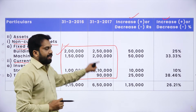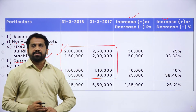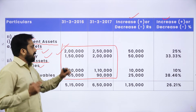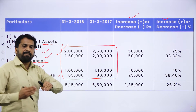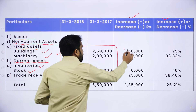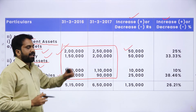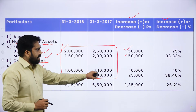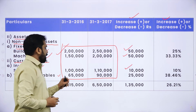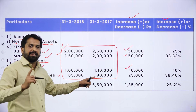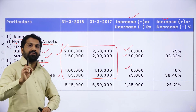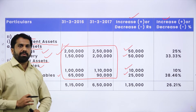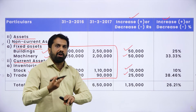The same procedure we used for liabilities applies to assets. In 2016, the building value was 2 lakh; now in 2017, it is 2 lakh 50,000 — a difference of 50,000. Last year machinery was 1 lakh, now it is 2 lakh — difference is 50,000. Trade receivable was 1 lakh, now 1 lakh 10,000 — difference is 10,000. Stock was 65,000, now 90,000 — difference is 25,000.